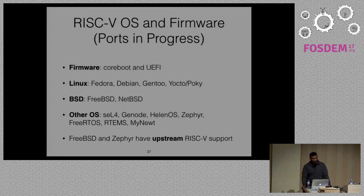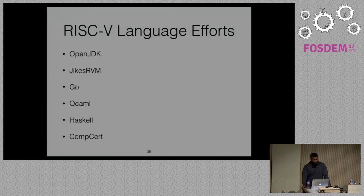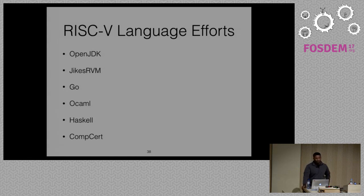There are many RISC-V language efforts in progress. For Java, people are working on OpenJDK and JikesRVM. There's a Go port, with Google people making a lot of progress quickly. There are people working on OCaml and Haskell support. CompCert, a formally verified toolchain, also has RISC-V support. Rust people are interested but waiting on the LLVM port — once LLVM comes in, we'll see a lot more language efforts getting farther along.